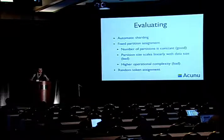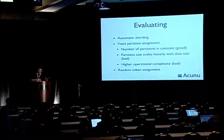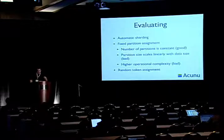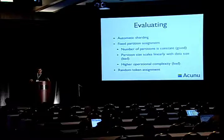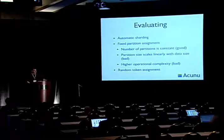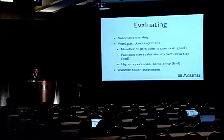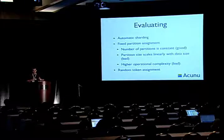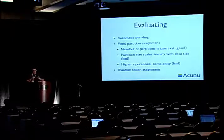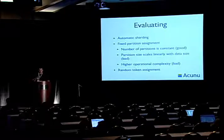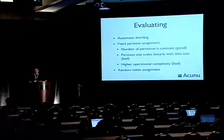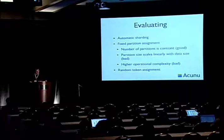With fixed partition assignment — creating Q tokens for the whole cluster up front, with Q over N tokens per node — the number of partitions is constant, which is good. But it means the size of the partition scales linearly with the amount of data we have. We add more nodes, the partitions still continue to grow, and that's not good. This method also has higher operational complexity because we have to balance the token size and number of tokens when we create the cluster. We have to create these Q tokens up front, and there's kind of no going back from that. That's probably the point in time when you're least familiar with what you're going to need.